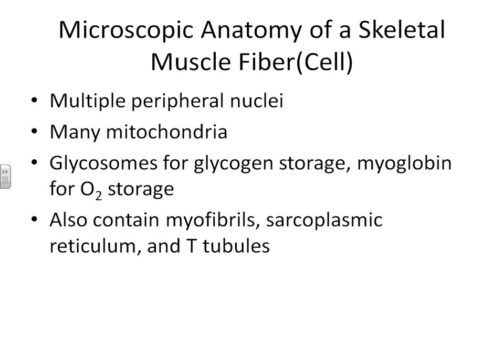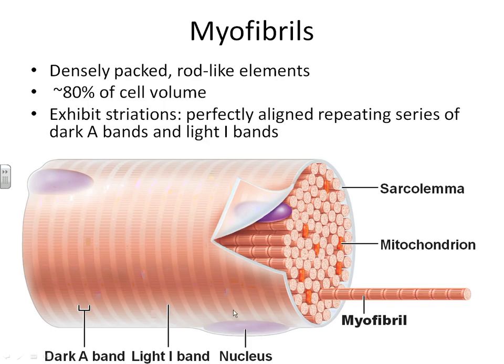Now we're looking at a blown-up image of just one muscle fiber. This whole thing is one muscle cell, one muscle fiber. You can see these purple things - those are the nuclei inside of this one muscle fiber, and they're pushed out to the edge because the majority of the inside of every muscle fiber is composed of these long, fibrous molecules known as myofibrils. Squeezed in between all the myofibrils are the multiple mitochondria, as well as the glycosomes and the myoglobin. One way we identified skeletal muscle was that skeletal muscle was striated. The reason we were able to see those stripes was because of the way the myofibril is arranged.